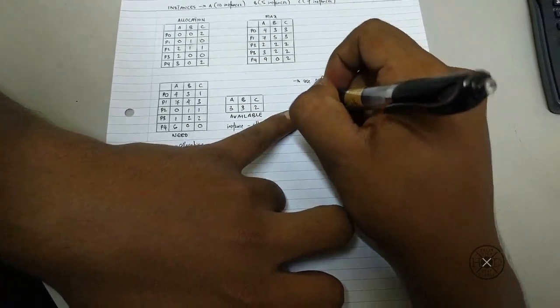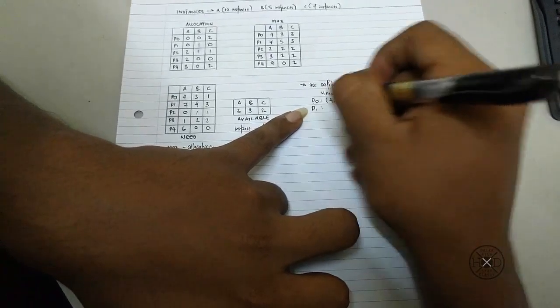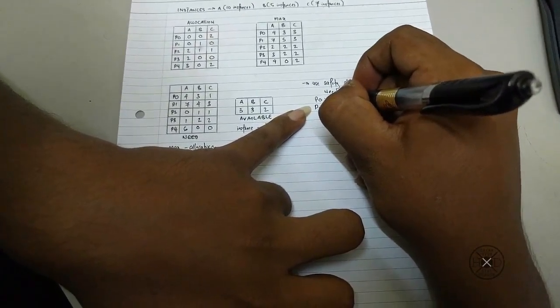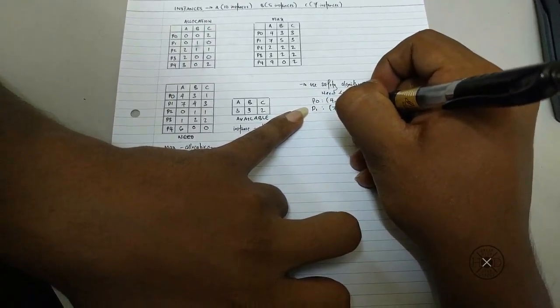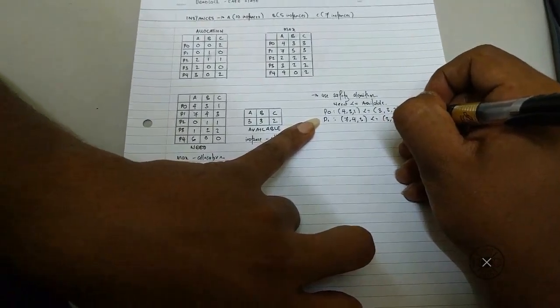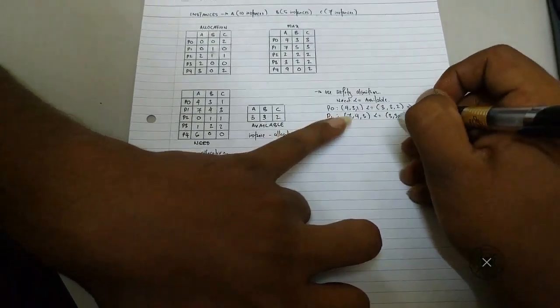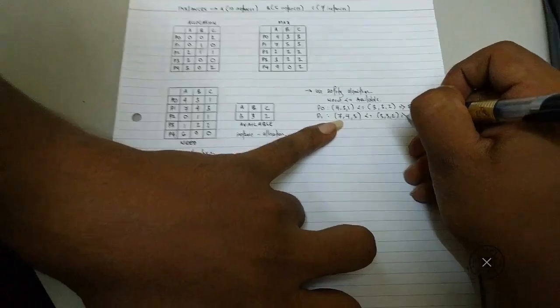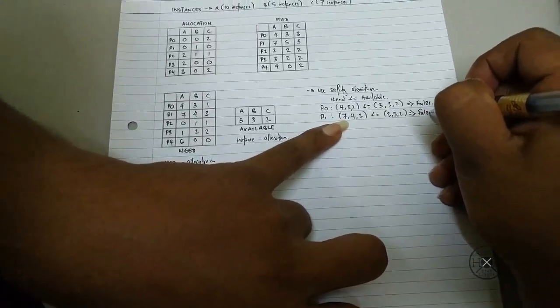So we will proceed to the next process, that's process 1. For process 1 is 7, 4, 3 less than equal 3, 3, 2. This also same, so this goes to false.